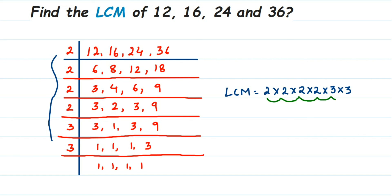So 144 is the LCM of these four numbers: 12, 16, 24, and 36. If you have any other question or doubt, you can drop a comment. Thank you so much for watching.